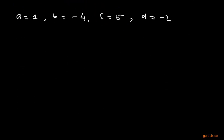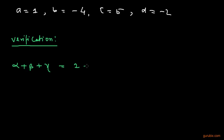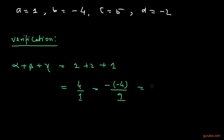Now we shall verify the relationship between the zeros and the coefficients. First, we find the sum of the zeros: alpha plus beta plus gamma equals 1 plus 2 plus 1, which equals 4. This can be written as 4 over 1, or equivalently as minus(minus 4) over 1, which equals minus b over a. Here b is the coefficient of x² and a is the coefficient of x³. So this relationship is verified.